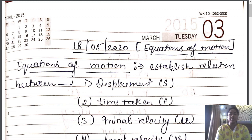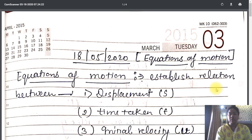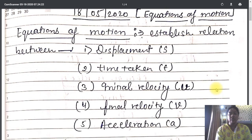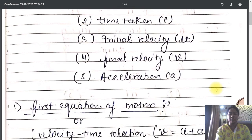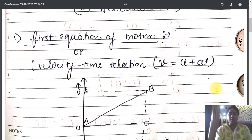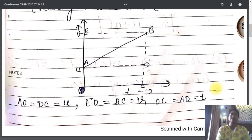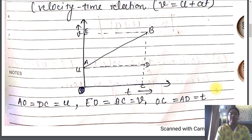We already talked about the first equation of motion, which gives us the relationship between velocity and time. As we know, the first equation of motion is defined as V equals U plus at, and with the help of the velocity-time graph, we calculated the expression V equals U plus at.